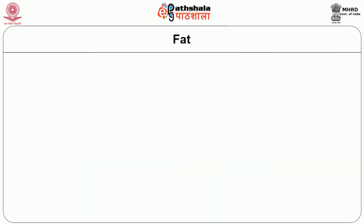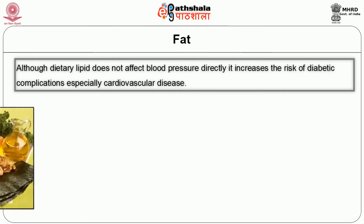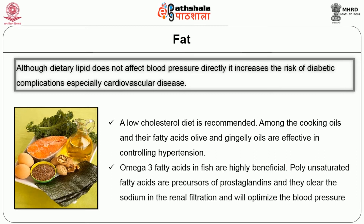The next nutrient is fat. Although dietary lipid does not affect blood pressure directly, it increases the risk of diabetic complications, especially cardiovascular diseases. Hence a low cholesterol diet is recommended. Among cooking oils, olive oil and gingelly oil are effective in controlling hypertension. Olive oil is a very good antihypertensive agent because it contains a high amount of polyphenols. Omega-3 fatty acids in fish are highly beneficial and help maintain good cholesterol. Polyunsaturated fatty acids are precursors of prostaglandins and therefore help clear sodium in renal filtration, optimizing blood pressure.